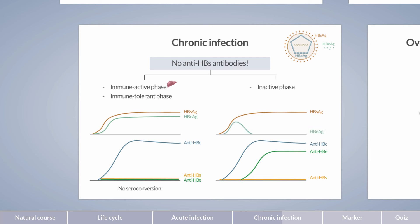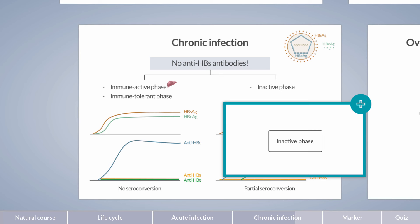Accordingly, HBe antigen becomes undetectable. This stage is associated with low levels of viremia and low-grade liver inflammation, and is therefore referred to as the inactive carrier state. The hallmark of the inactive carrier state is the conversion from HBe antigen positive to HBe antigen negative. Since only anti-HBe antibodies are produced but no anti-HBs antibodies, this is referred to as partial seroconversion. Conversion to the inactive phase may occur spontaneously or be treatment induced. Exacerbation with signs of increased liver inflammation is possible, sometimes referred to as HBe antigen negative immune reactivation phase, and even reversion back to the immune-active phase is possible.